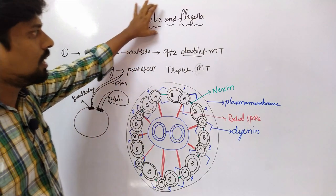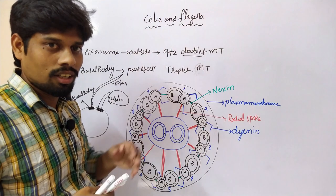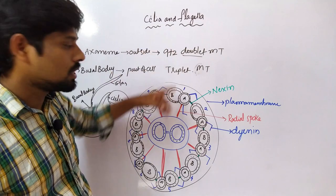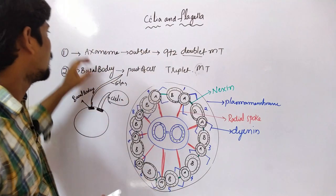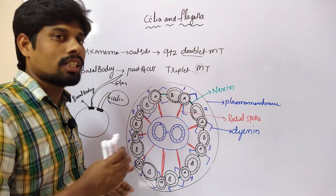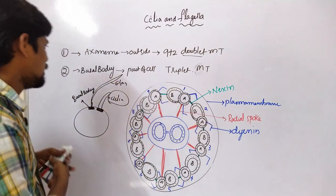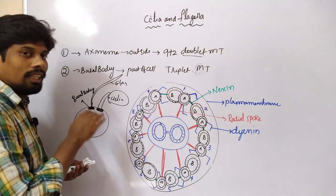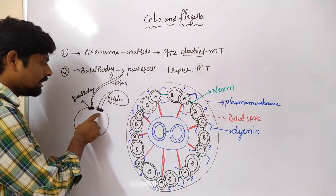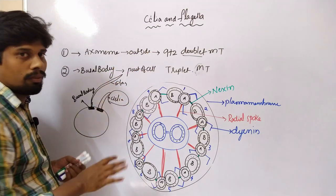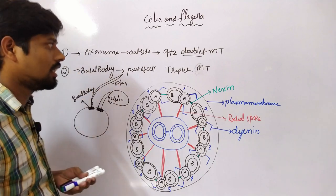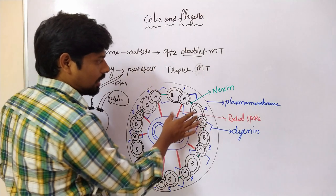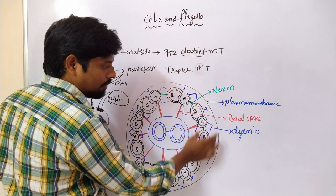In this way, the complete structure — the internal architecture of cilia and flagella — is present in the form of 9 plus 2. All this structure is the axoneme, present outside of the cell. Coming to the basal body: the basal body is present inside the cell. Such basal body connects with the axoneme outside structure. The basal body contains a triplet — a 9 triplet structure.